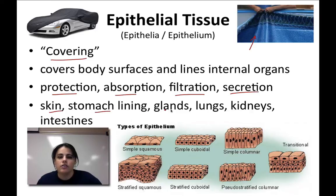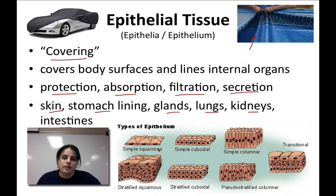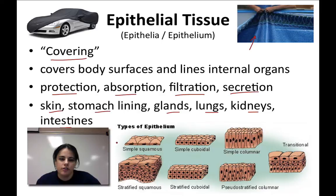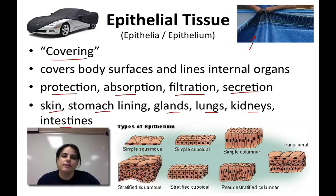So skin, stomach, glands, lungs, kidneys, intestines, and other organs — they kind of separate the inside from the outside, your body from its external and internal environment. There are many different types of epithelial tissue, but you're not going to be responsible for knowing them all. I pretty much just want you to know the general idea and function of epithelial tissue.